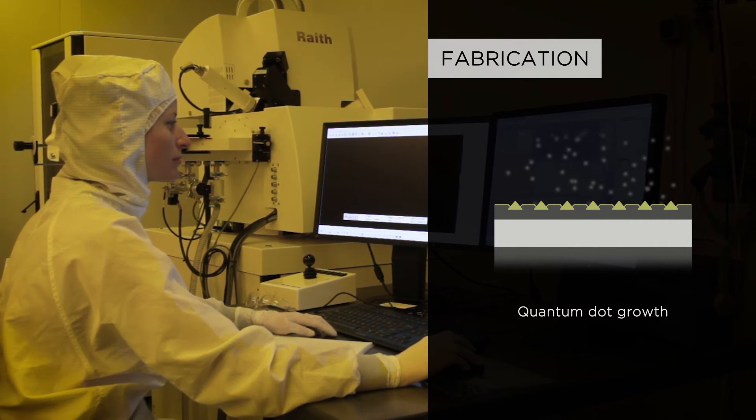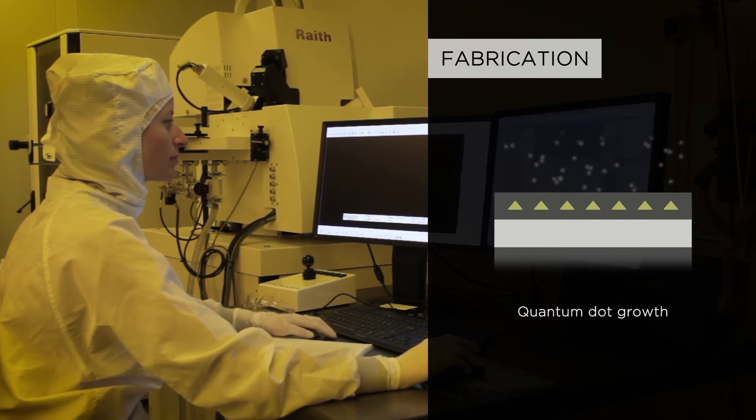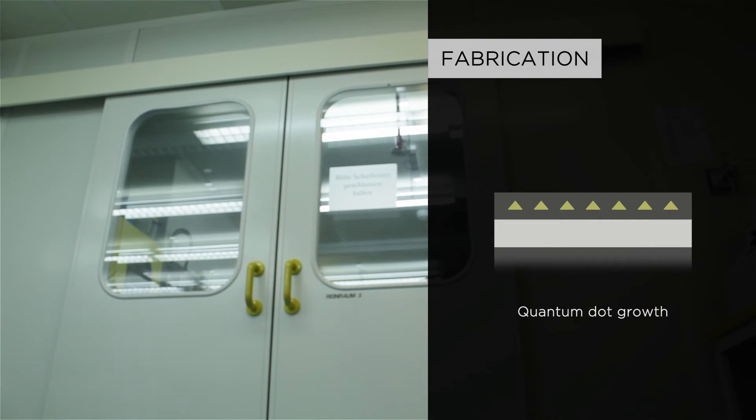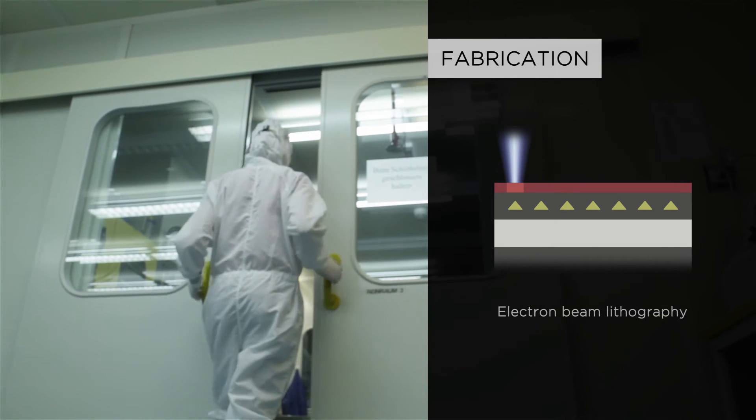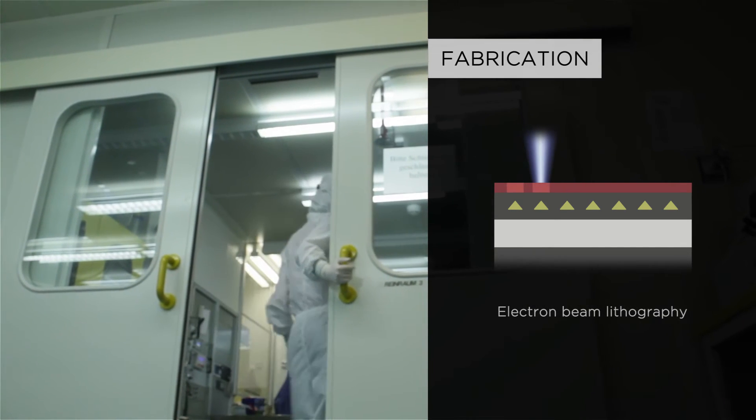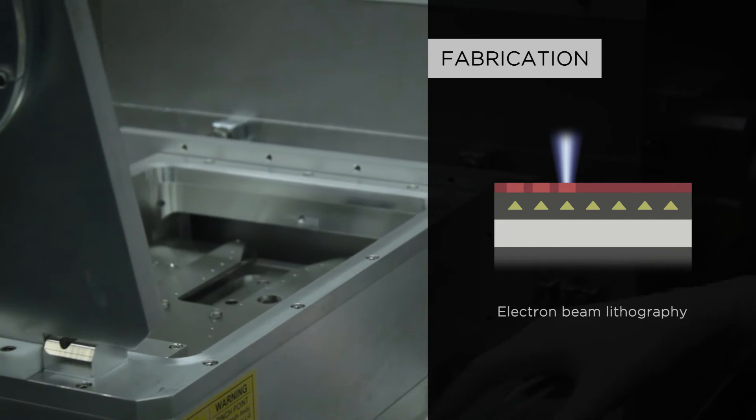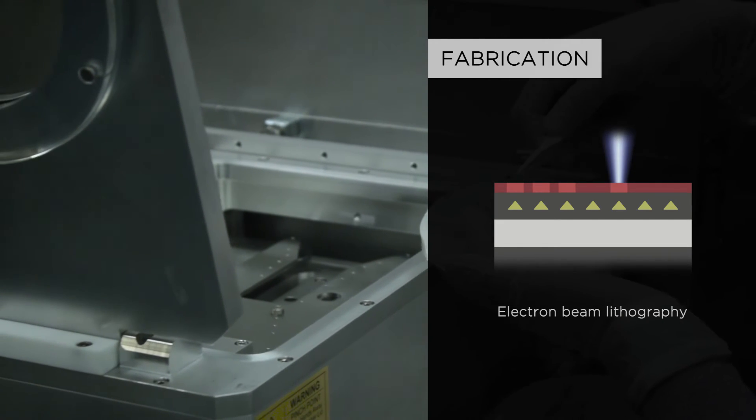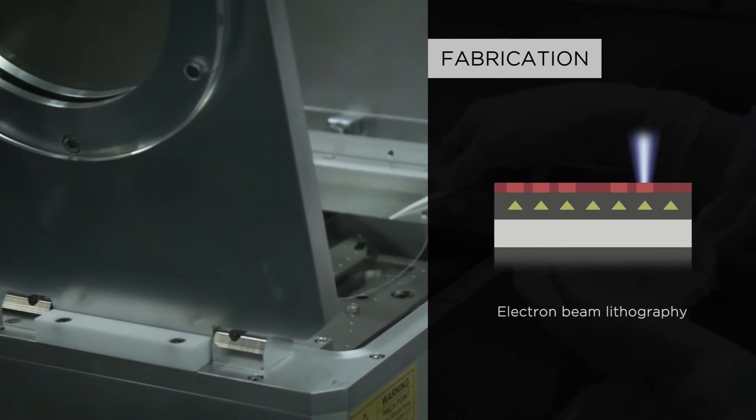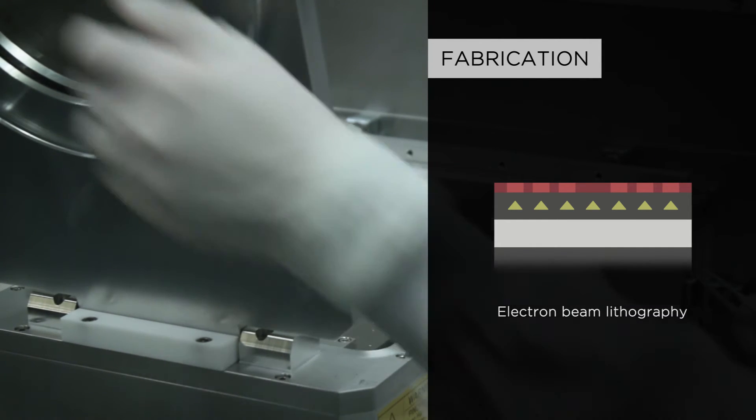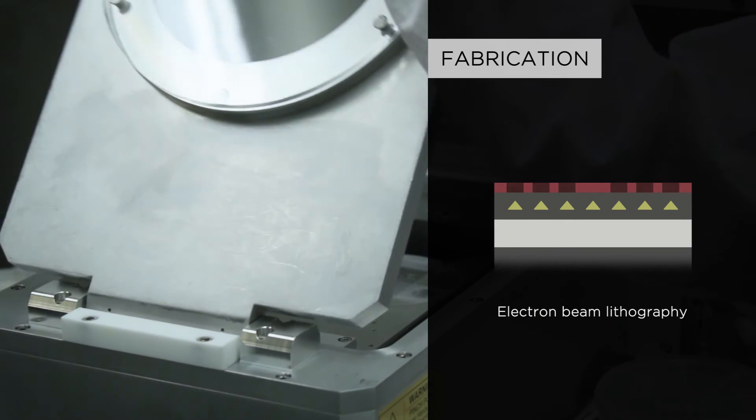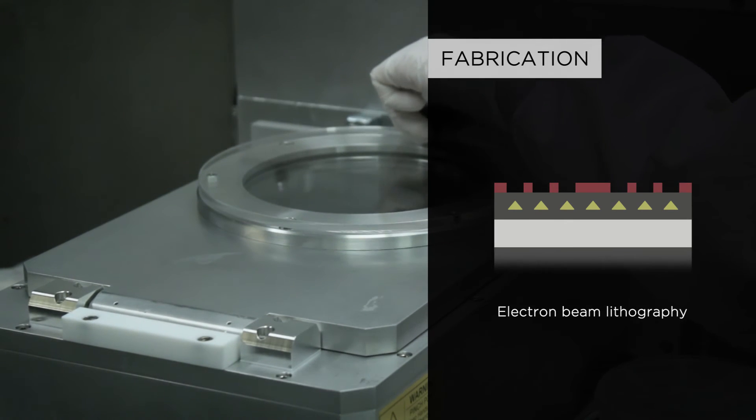To define the air hole pattern of the photonic crystal cavity, we use electron beam lithography. This technique is based on local modifications of an electron-sensitive polymer film that is irradiated with a focused electron beam. The exposed film areas can be selectively removed, whereas the non-exposed areas remain on the sample, acting as a mask during the following etching step.